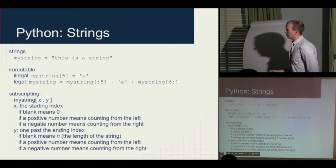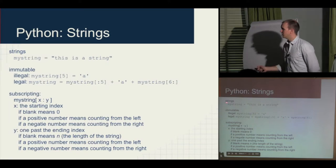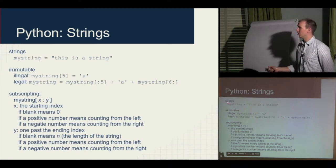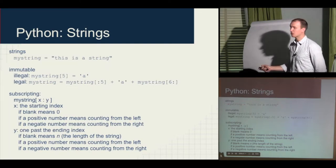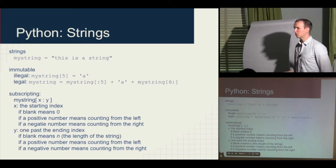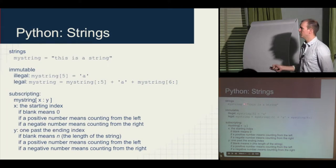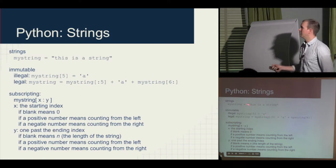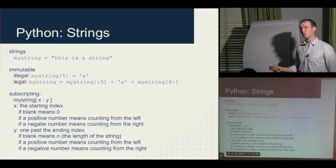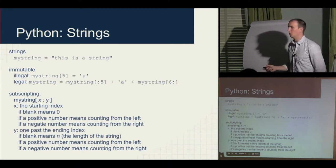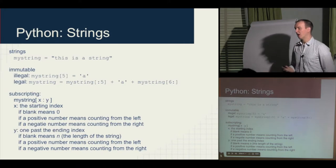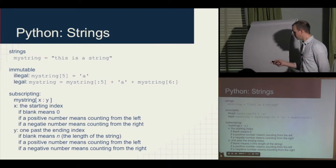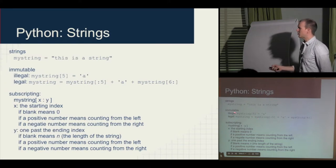Strings are pretty cool. If you want to create a string, you say mystring = 'this is a string' and enclose it in quotes. You can use double quotes or single quotes. If you use double quotes, you can put a single quote in the middle and it won't mess things up, and vice versa. The weird thing about strings is that they're immutable. Strings are like arrays — in Python they're indexed 0, 1, 2, 3. You can ask for the entry in a string, but you can't assign a value into an entry. You can't change an existing string.